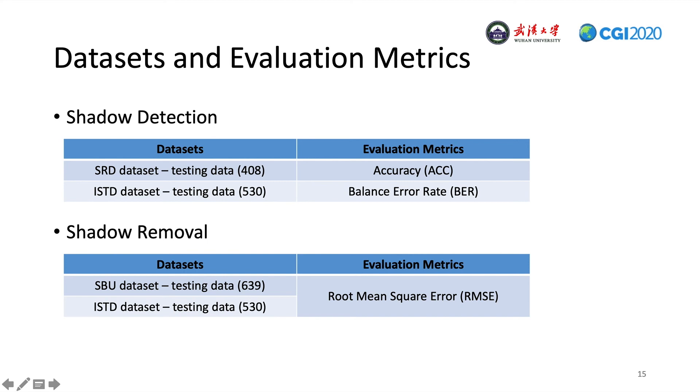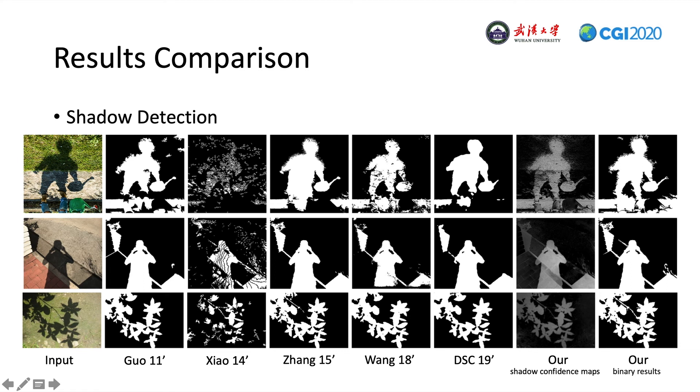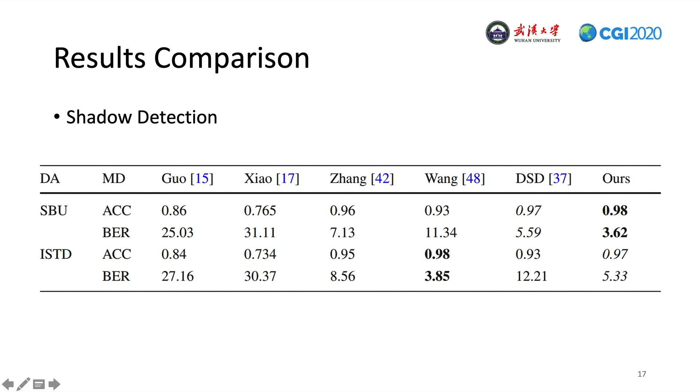Here are some shadow detection results of our method and other methods. Deep learning methods heavily depend on the variety of the training data. For some scenes where it's hard to obtain ground truth training data, these methods do not work well. This table presents the quantitative comparison with state-of-the-art methods on shadow detection accuracy for the two benchmark datasets.